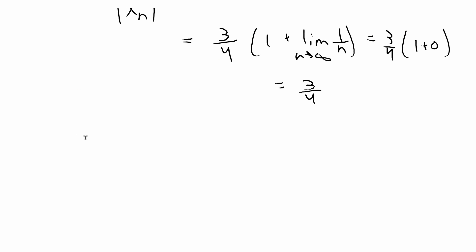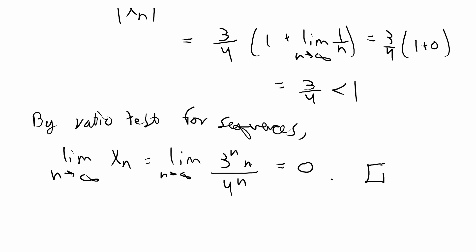So we're just going to write that in the concluding statements. So by the ratio test for sequences, the limit of x_n as n goes to infinity is equal to the limit of 3 to the n times n over 4 to the n, which is equal to 0. And we're done with this problem.